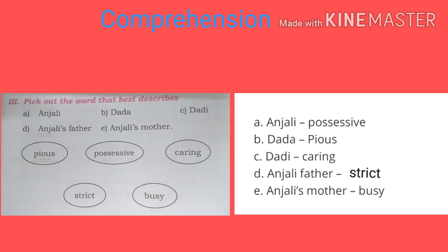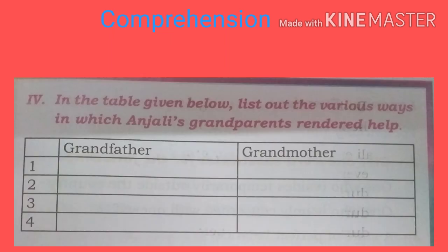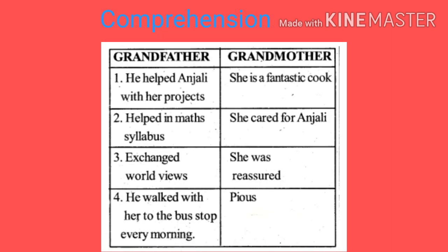Now pick out the word that best describes each character. Anjali is very positive. Dada is very pious. Dadi is very caring. Anjali's father is also positive. Anjali's mother is busy. In the table, list out the various ways Anjali's grandparents rendered help. Grandfather helped Anjali with her projects and math syllabus, exchanged world views and news, and walked with her to the bus stop every morning. Grandmother was a fantastic cook, cared for Anjali, and was reassuring and pious.